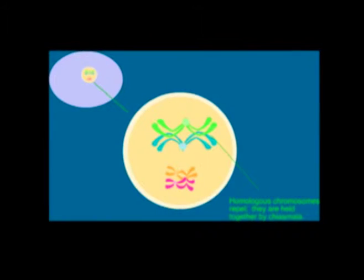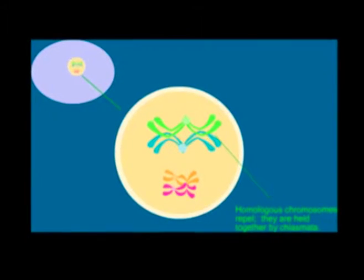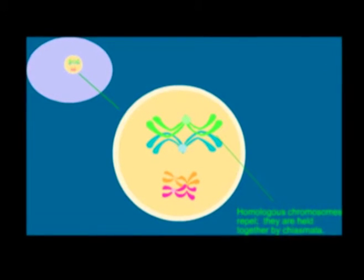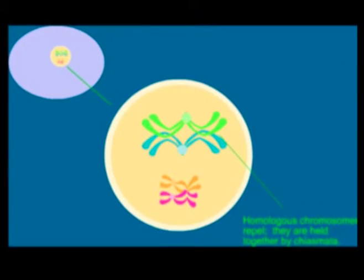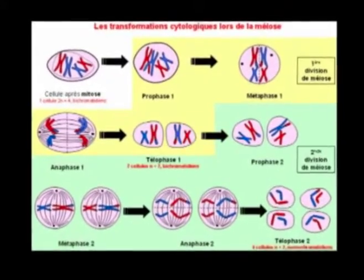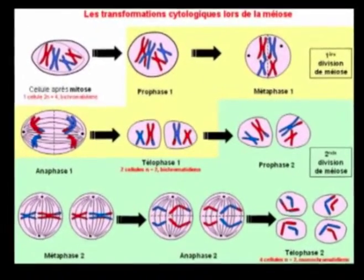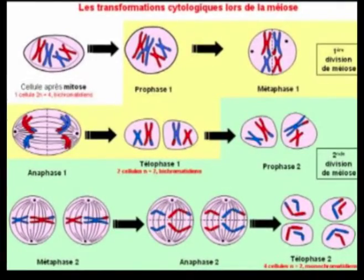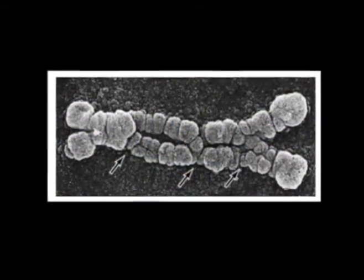Diakinesis: In the diakinesis stage, the bivalent chromosomes become more condensed and evenly distributed in the nucleus. During diakinesis, the chiasmata moves from the centromere towards the ends of the chromosomes and the intermediate chiasmata diminishes.